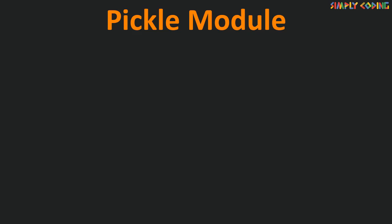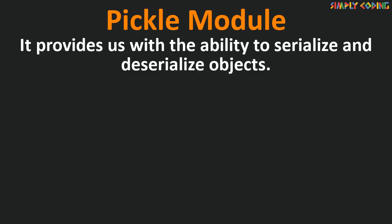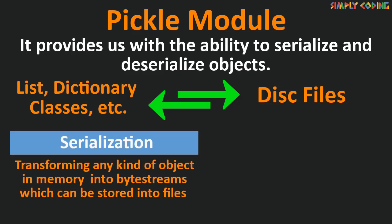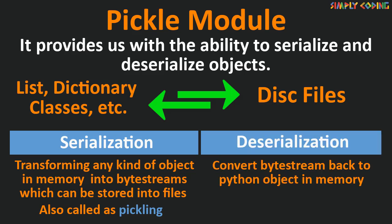Now why do we need to use the pickle module? This is because pickle module provides us with the ability to serialize and deserialize objects. So if you have data in any format such as list, dictionary, tuple, or classes, you can use pickle module to convert them into files to store them on hard disk and then read it back in exactly the same format. Serialization is transforming any kind of object in memory into a byte stream which can be stored into files — also called pickling. Similarly, deserialization is converting a byte stream back into a Python object in memory, also called unpickling.